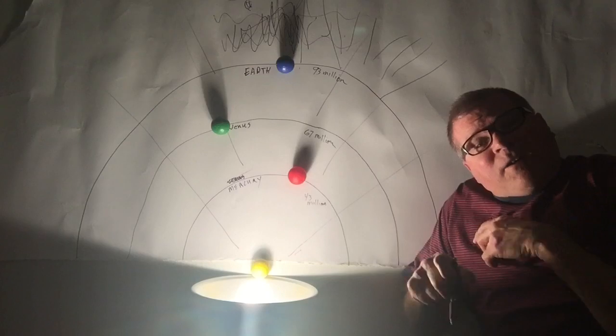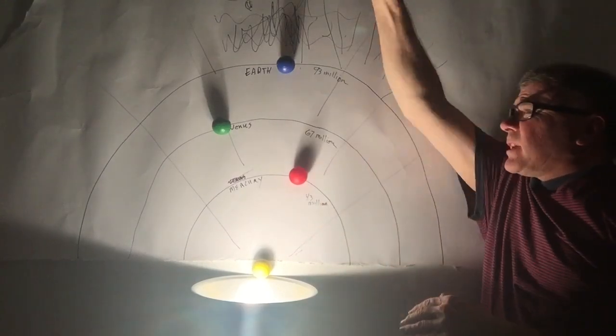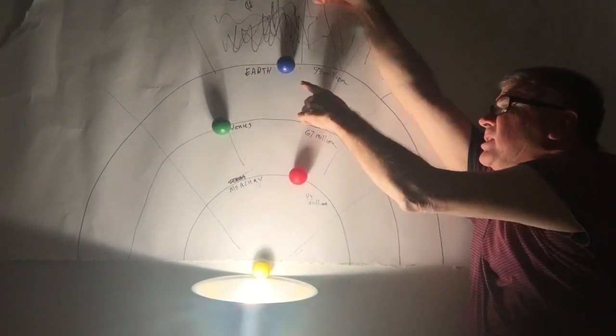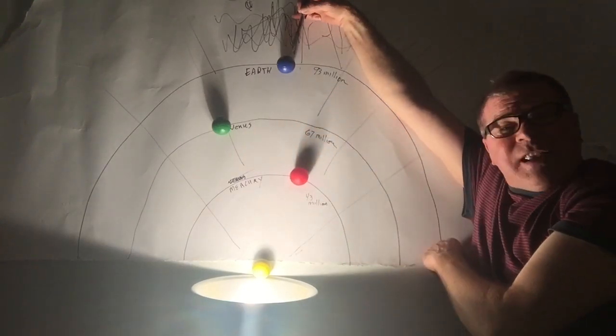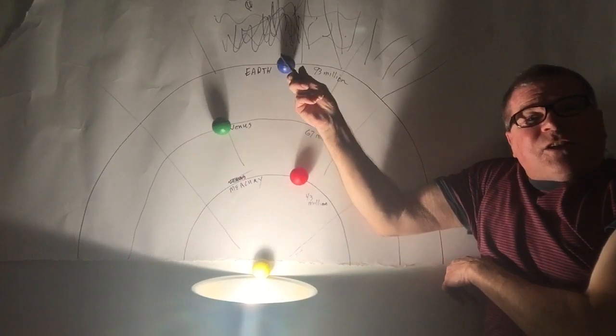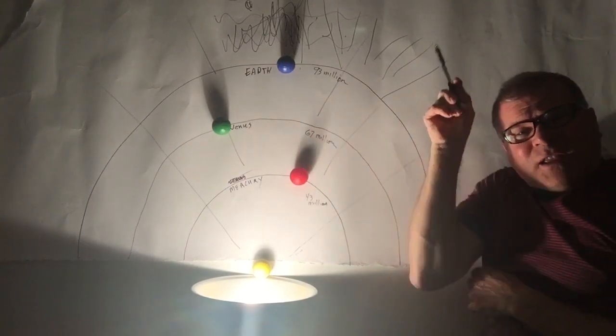Right now, the reason I've got the light - I just wanted to cast a strong enough shadow so you can see this would be daytime on this side and it's nighttime on this side, the dark side.